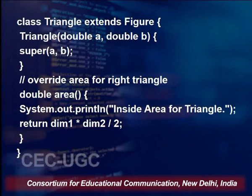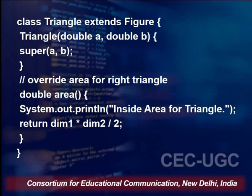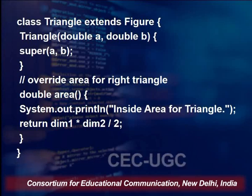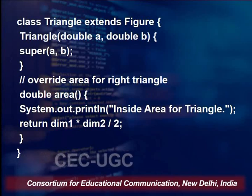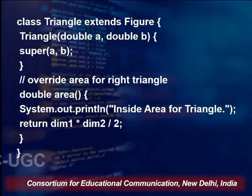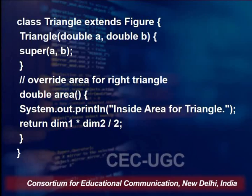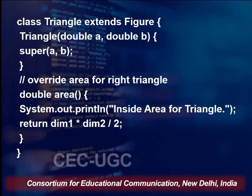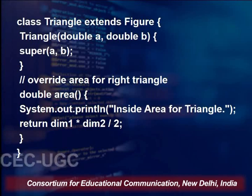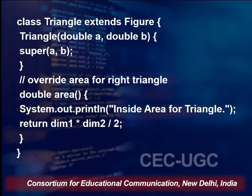Class Figure was the parent class, not having any specific implementation of the function area. When class Rectangle extended Figure and overridden the method area, it gave its own implementation. Similarly, class Triangle has given its own specific implementation — its own formula — to the function area, returning dim1 multiplied by dim2 divided by 2. So with the interface given in the parent class Figure, specific implementations are given by the two child classes: Rectangle returns dim1 times dim2, and Triangle returns dim1 times dim2 divided by 2.